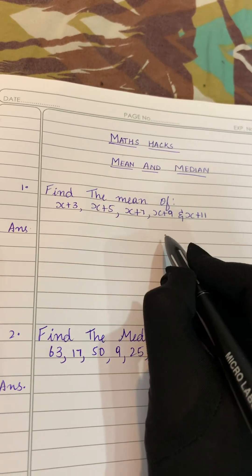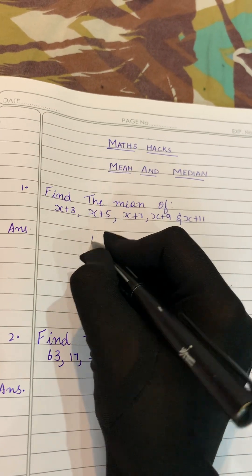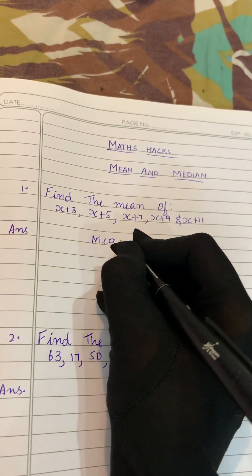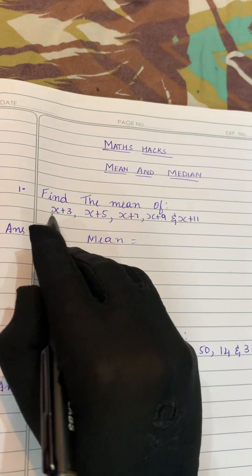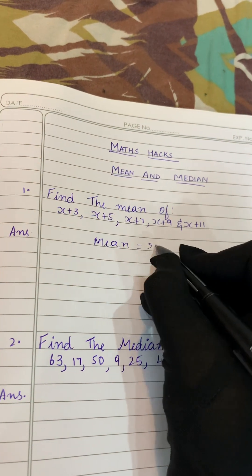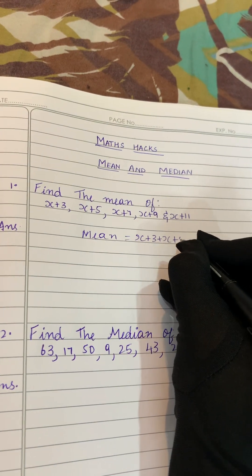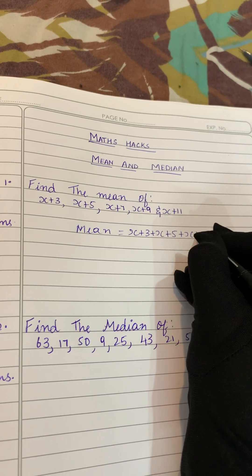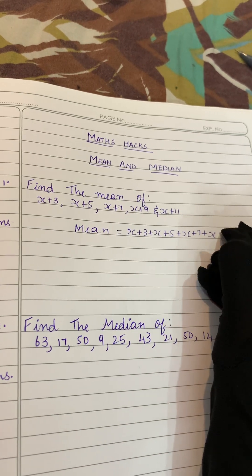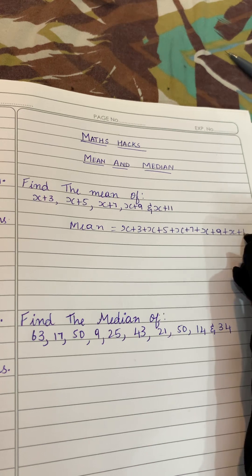The formula to find out the mean is the sum of terms divided by number of terms. So mean equals sum of terms. Sum is addition, we have to add all these terms. So x plus 3 plus x plus 5 plus x plus 7 plus x plus 9 plus x plus 11, these are our terms.